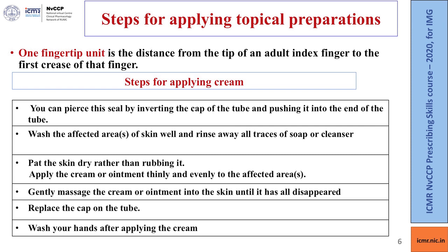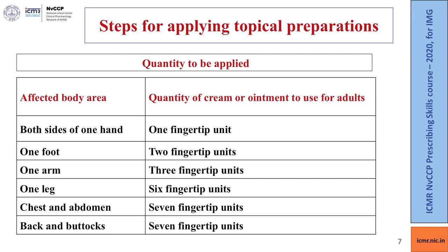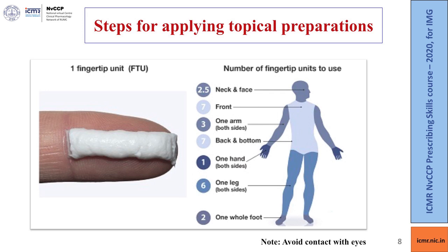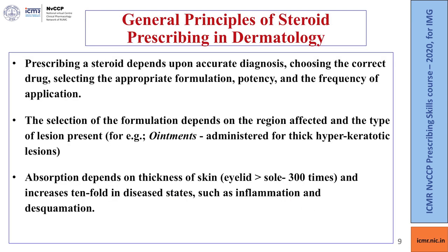Replace the cap on the tube and wash your hands after applying the cream. The quantity required in adults varies with the affected part: one finger unit for both sides of hands, two for one foot, three for one arm, six for one leg, and seven finger units each for the chest and abdomen, and for the back and buttocks. A pictorial representation of the finger unit and quantities is provided.